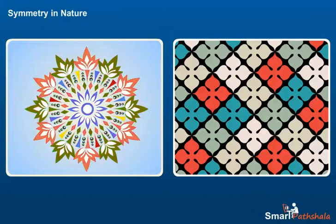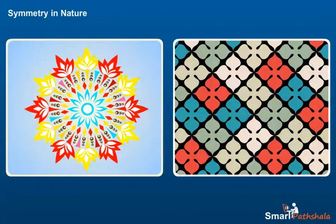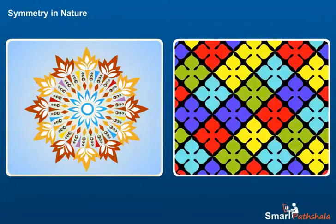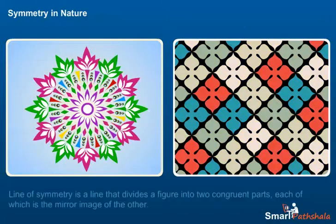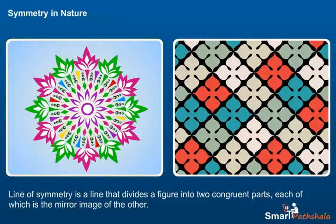The two parts are the mirror images of each other. Line of symmetry is a line that divides a figure into two congruent parts, each of which is the mirror image of the other.